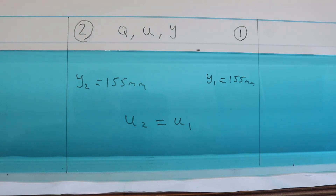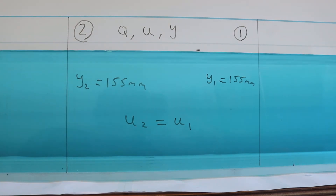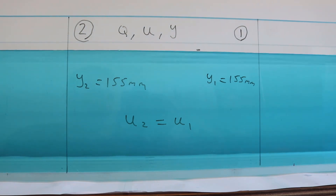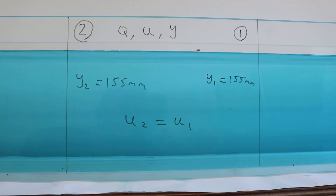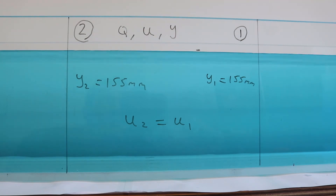Although this is a very obvious example, there's an important point to be made here: if the flow is steady and uniform, and if you know the parameters at any one point in that flow, you can then assume the parameters for every other point in that flow, for as long as the flow is steady and uniform.